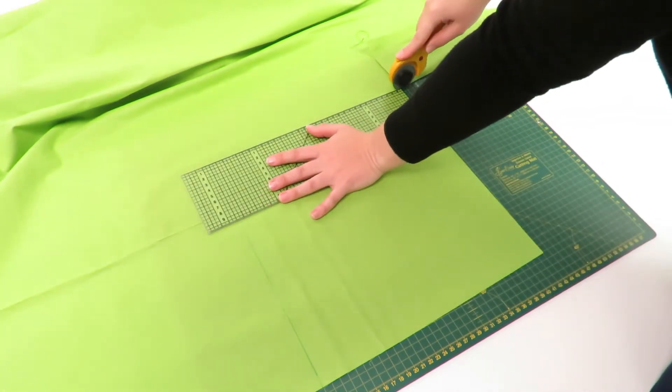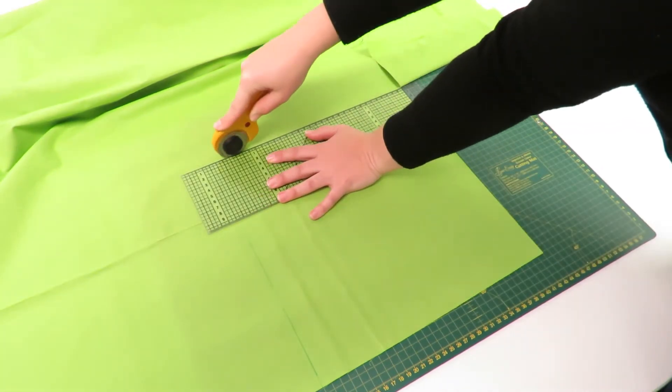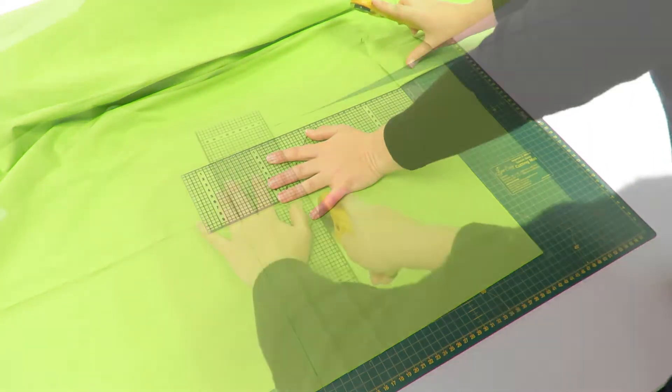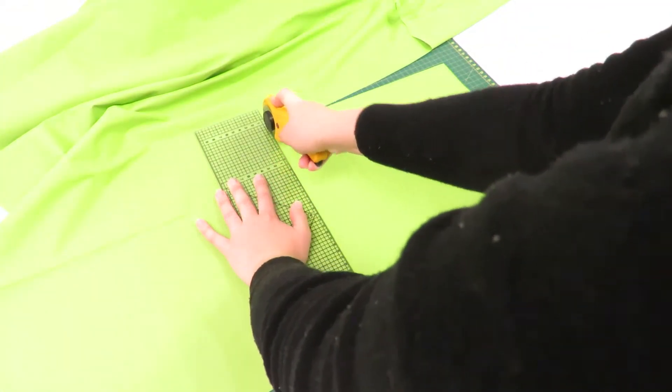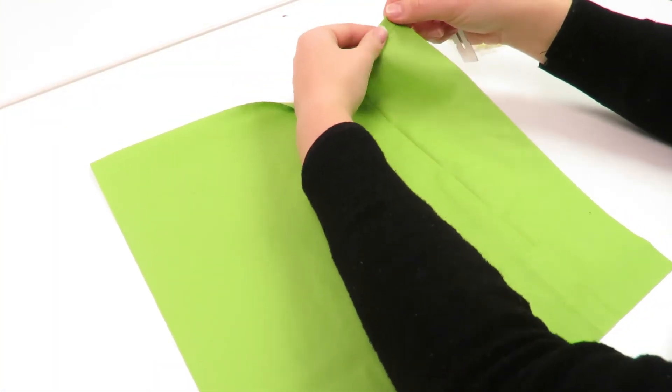When you have your cut out pattern, start measuring a one centimeter seam allowance all around and pin it in place.